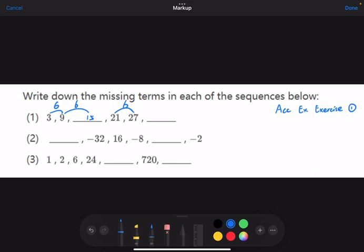And to check if we're correct, we can add 6 to the 15. And we do get 21, so all correct, no problem. And then to get the last blank, we can simply add 6 to 27, which will give us 33. And that's the first sequence.